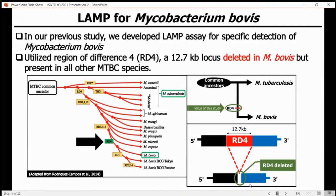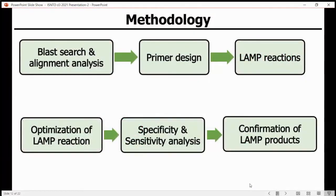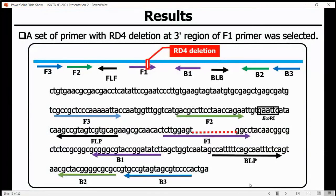These were our methodologies: primer design and confirmation of LAMP products. We found out that after designing and testing around 40 primer sets, a primer set targeting the Rd4 deletion 3-prime region of F1 was selected because it showed high specificity and sensitivity for the detection of Mycobacterium bovis.